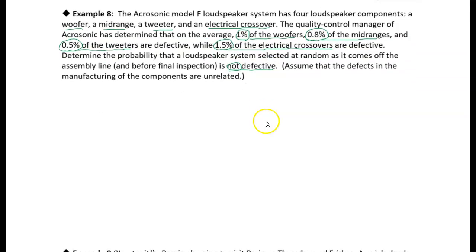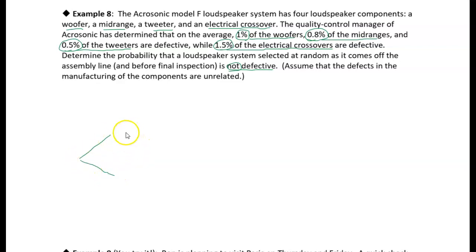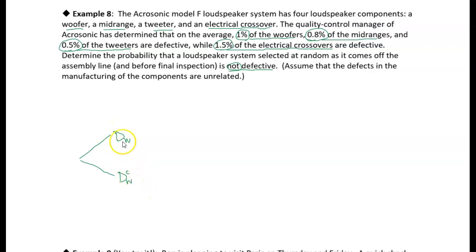We could draw a tree for that. This gets a little hairy because we have four events, but think of it as: we've got to select a woofer — that's our first stochastic event, and it's either going to be defective or not defective. I'll represent that as D sub W for defective woofer, and the complement for not defective.